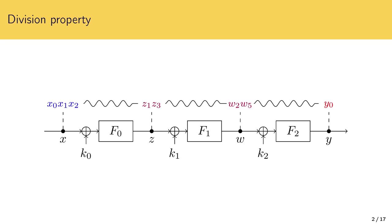The core idea of division property is very simple. In order for y0 as a function of x to contain the monomial x0 x1 x2, there must exist a sequence of monomials in the intermediate states, such that at each step the product of functions defined by the output monomial contains the input monomial. For example here the product of the bits of w with indexes 2 and 5 as a function of z may contain the monomial z1 z3. Such a sequence is called a division trail and each step in it is called a division property transition.